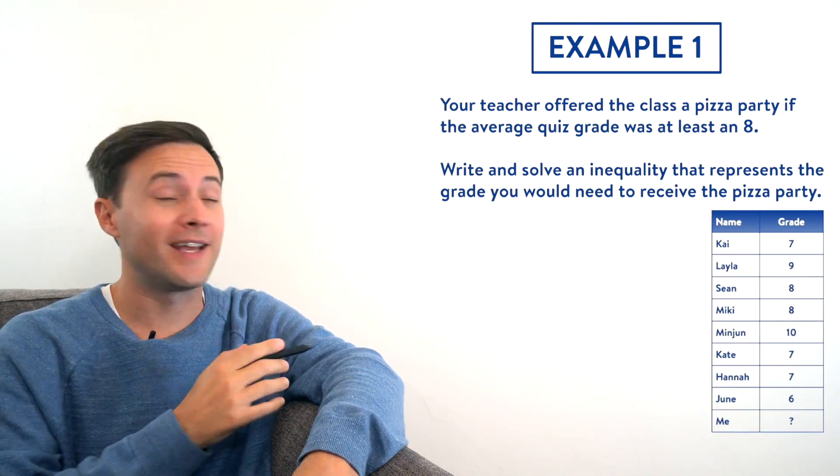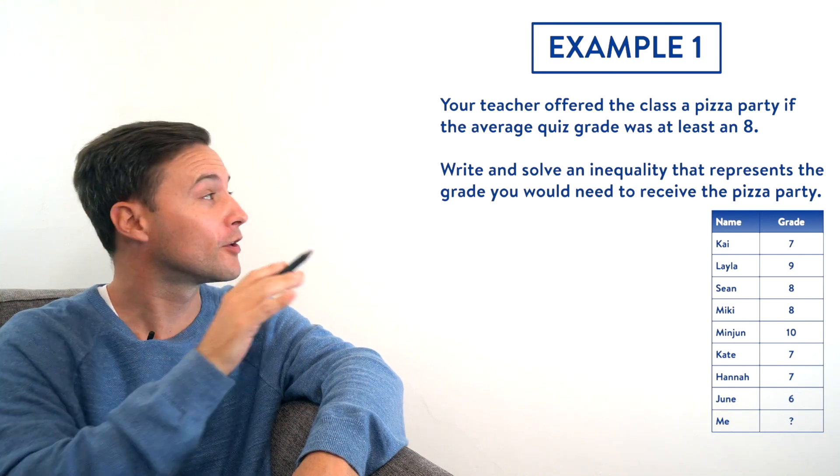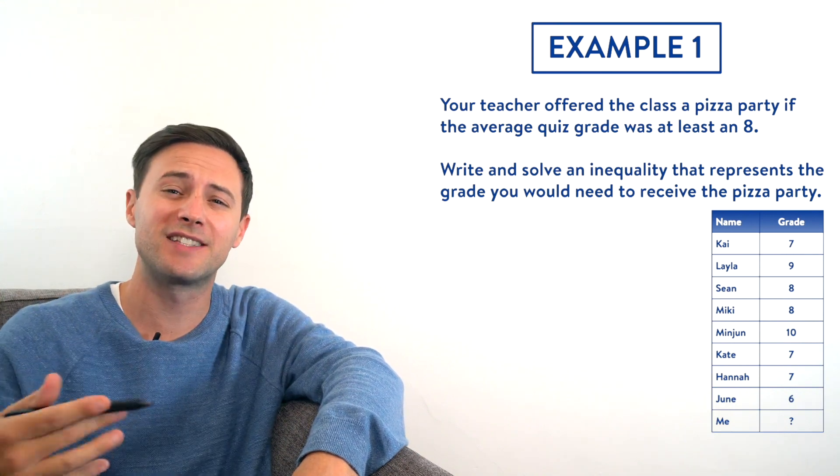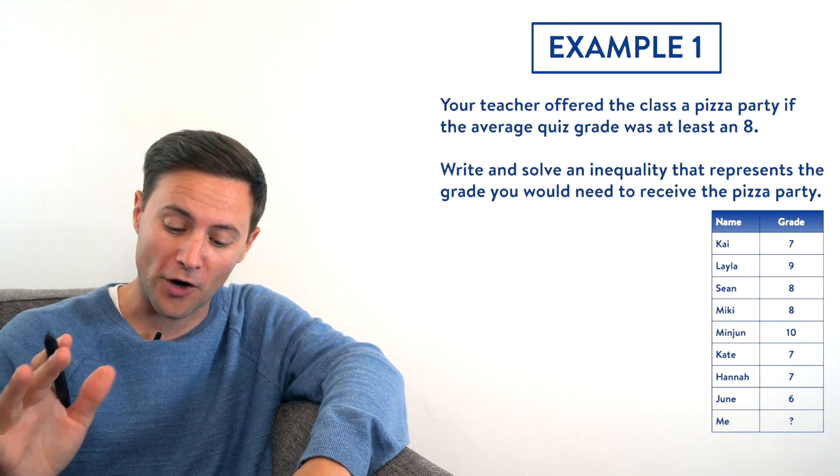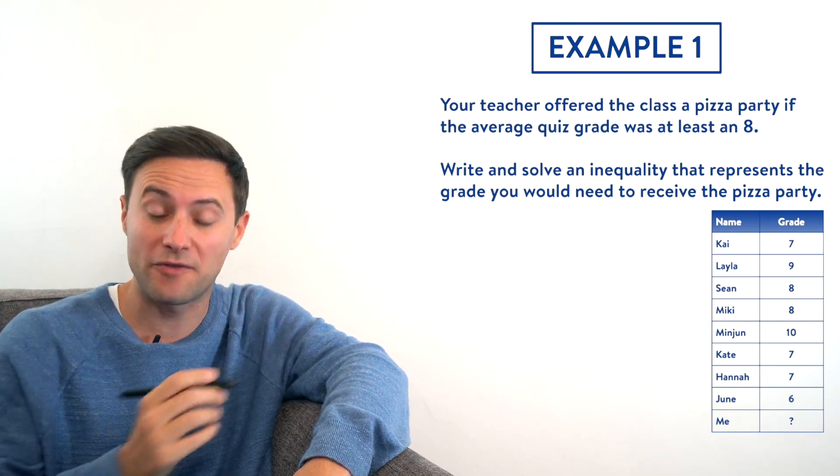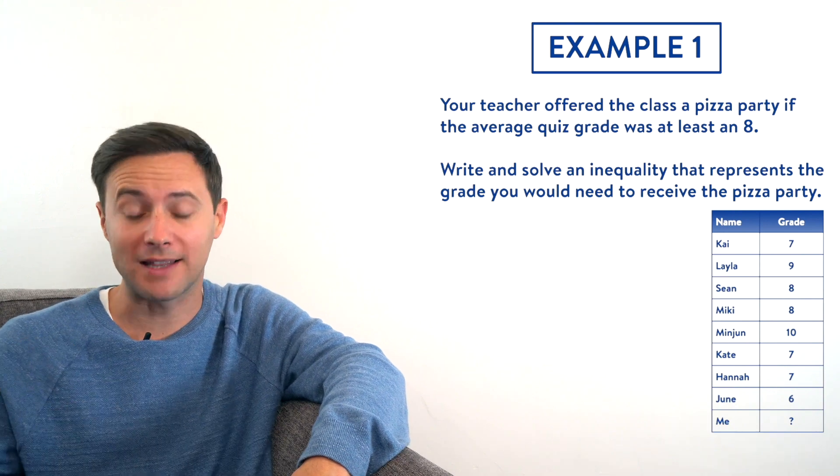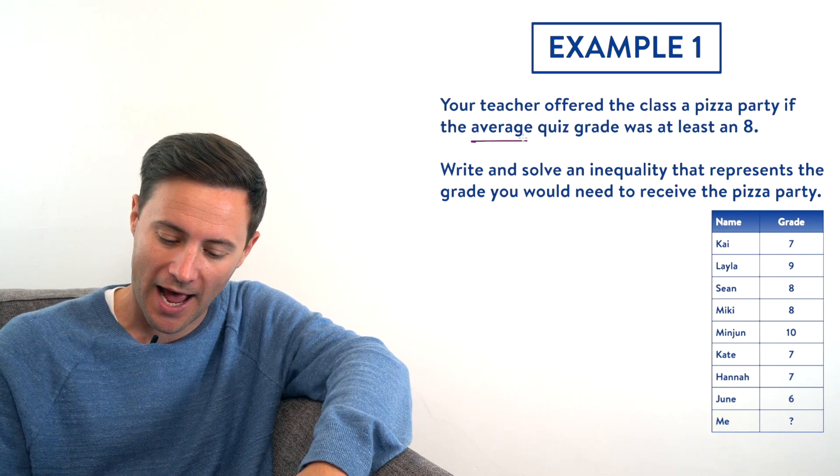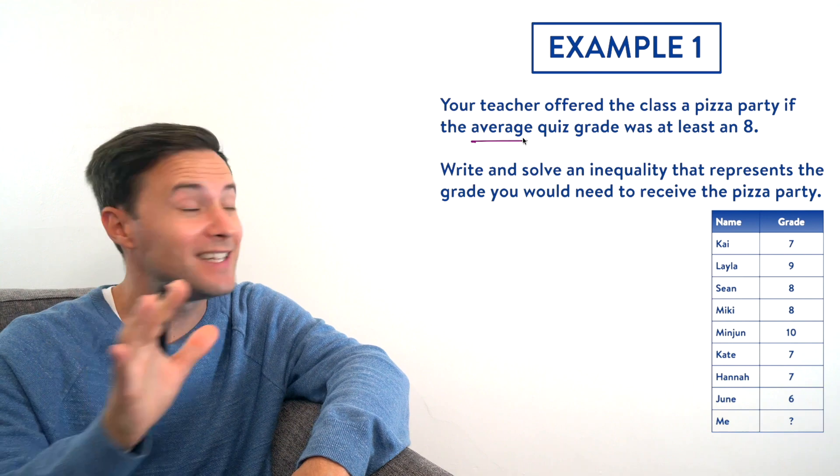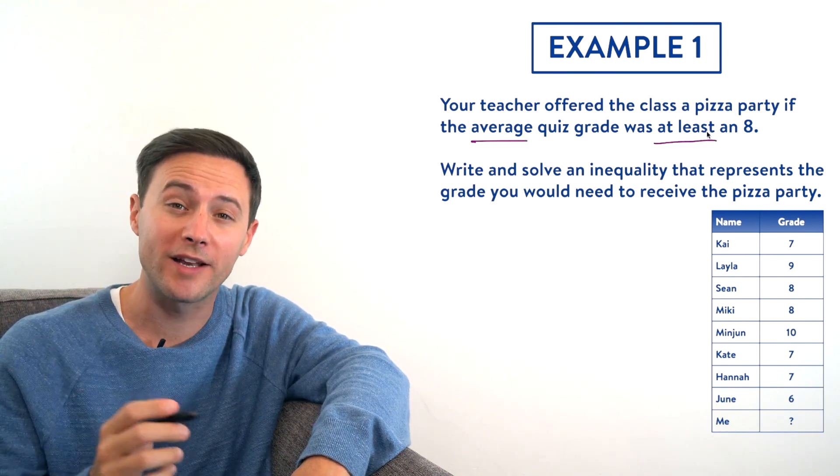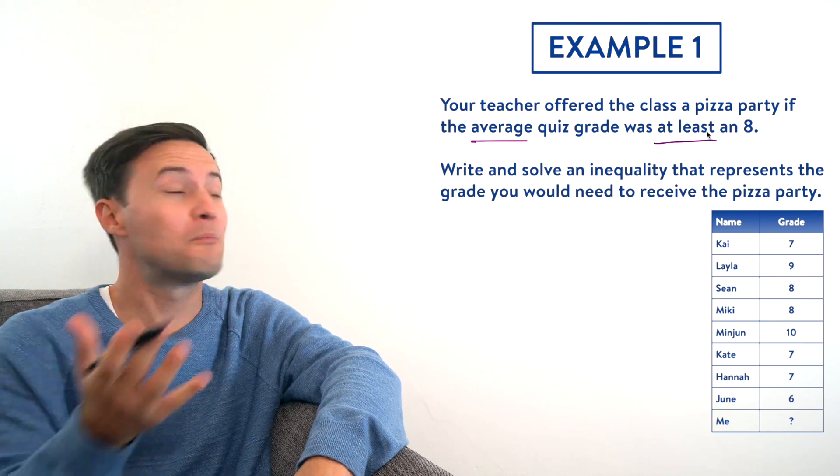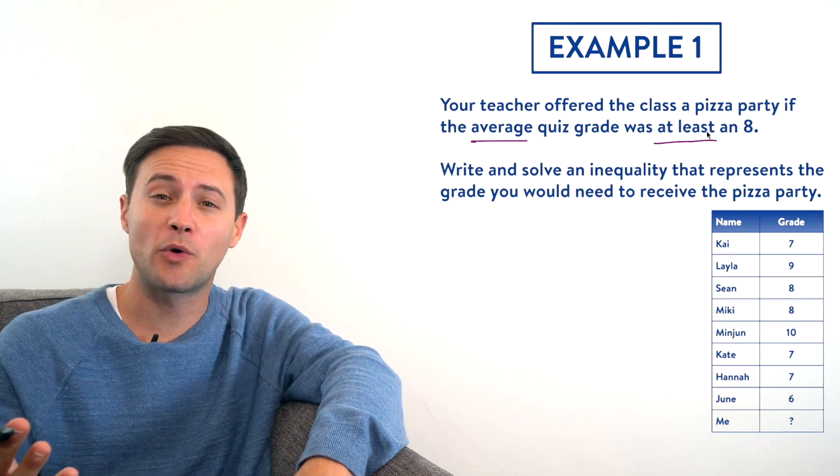Well first we need to write an inequality, so let's first look for keywords. They're going to give us an idea of what the inequality is going to look like. Hopefully first you notice the word average. We need an average grade of at least 8. I'm going to underline average. At least is another keyword that's going to help tell us what inequality symbol to use, and now more or less we're ready to start our inequality.